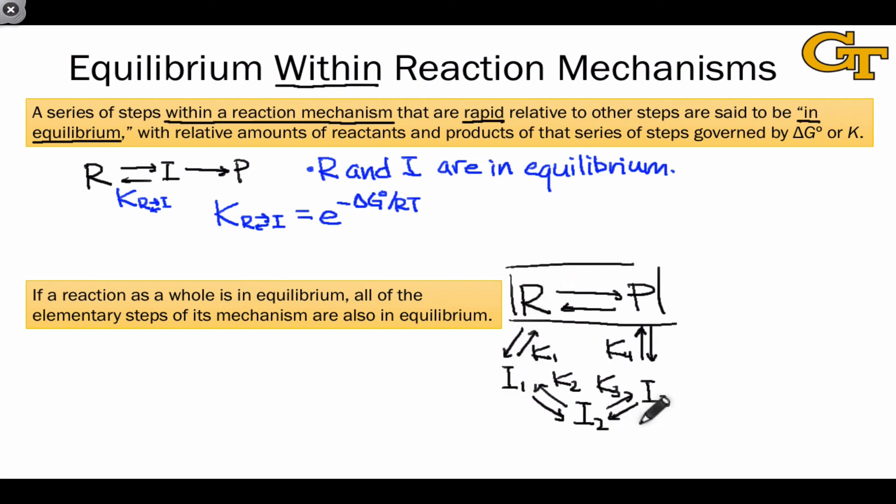and of course the free energy differences between each pair of molecules, R and I1, I1 and I2, etc. For entire reactions or elementary steps within reactions that are in equilibrium, it's all about the value of K and the value of delta G. And as you'll see, we can make good qualitative guesses about the values of these numbers using the stability factors that we've already discussed.